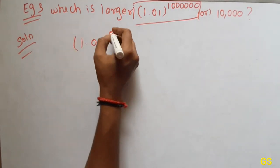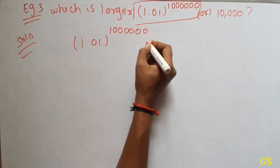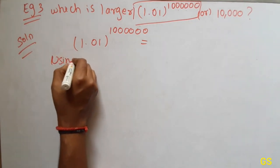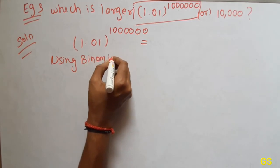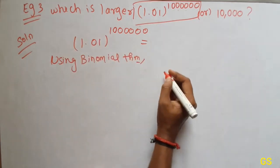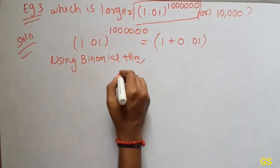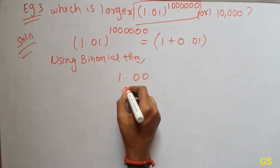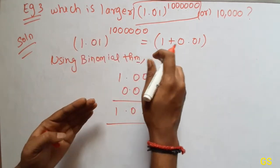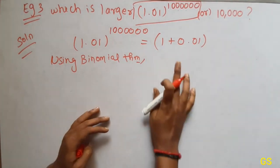1.01 the whole power 1.02460, 2460. Binomial — as usual we will do it. So using the binomial theorem we will solve it. That uses 1 plus 0.01 — 1 plus 0.01, that is 1.01 — in a plus b format.